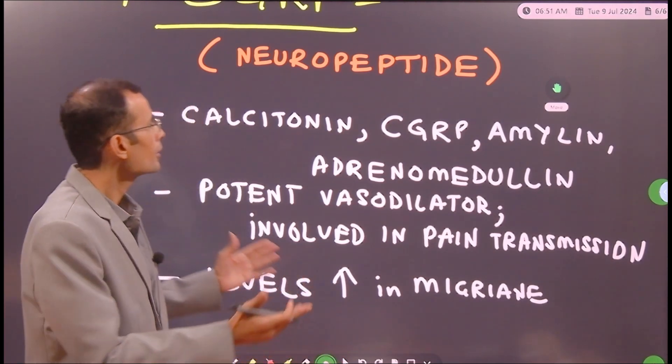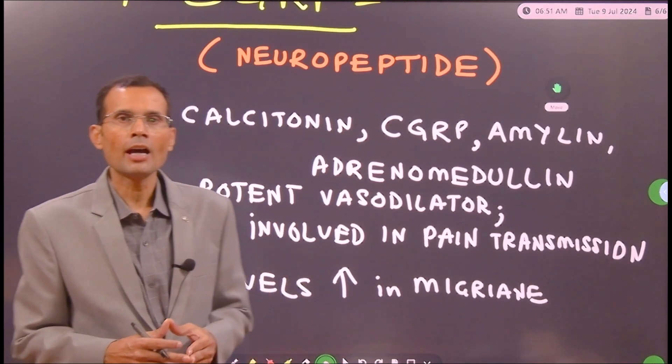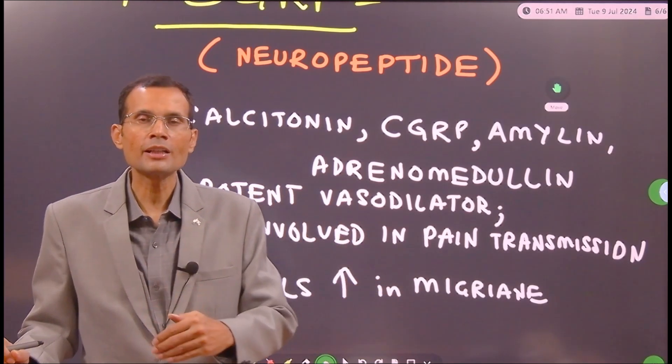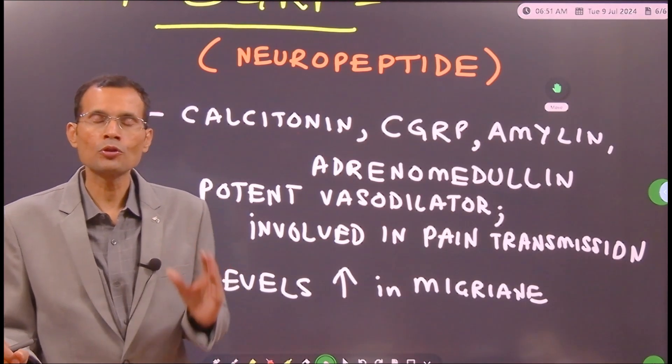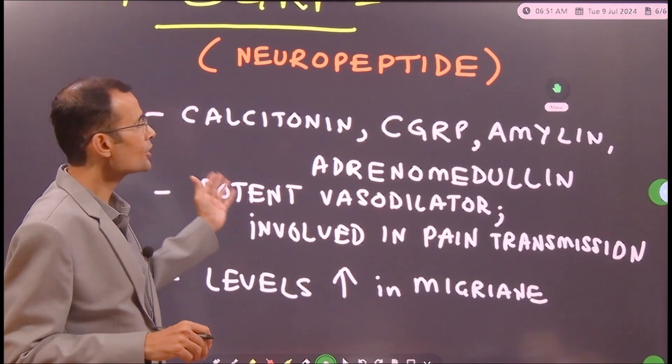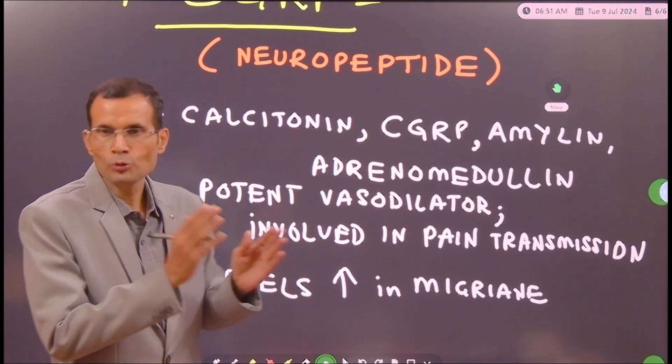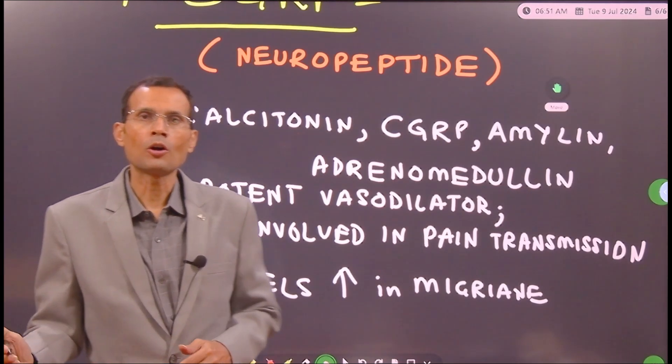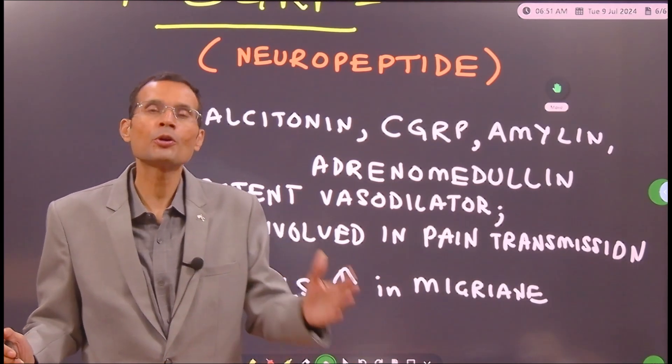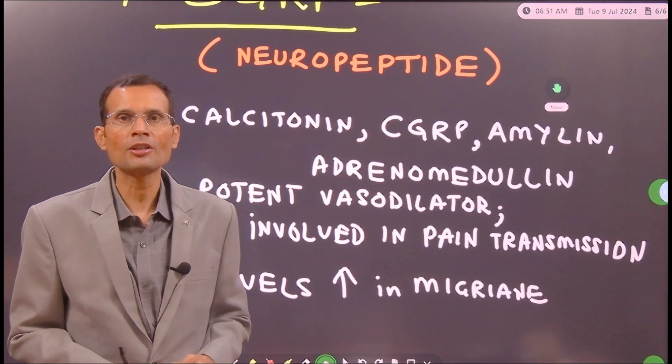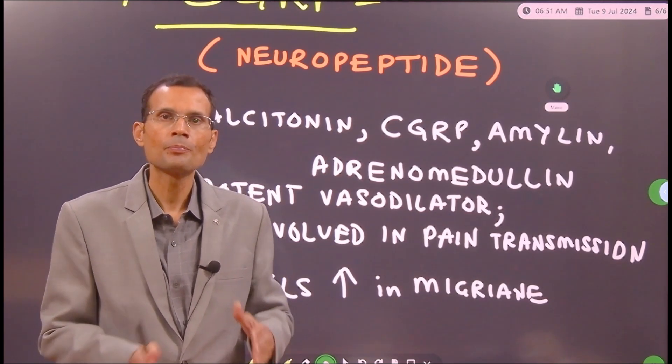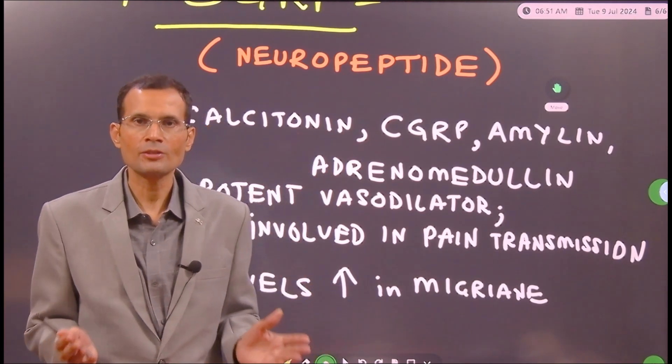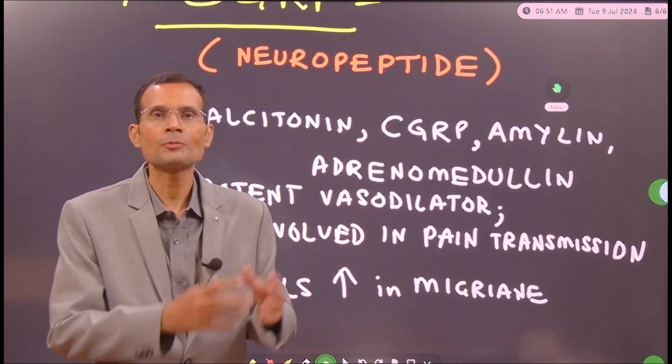What could be the clinical application of this? They are targeting CGRP in conditions of migraine. Monoclonal antibodies have been developed against CGRP so that those antibodies can reduce the pain of migraine. So all other researches are still going on related to CGRP. This much is known about it. But this is our hormone, the calcitonin, and the related peptide I also included just to have a wholesome knowledge about this particular ligand.